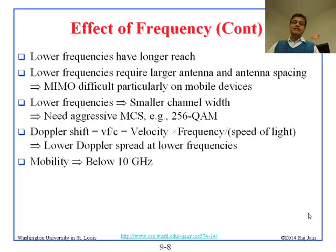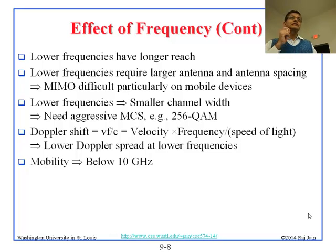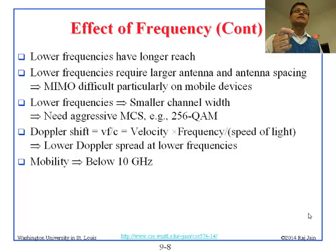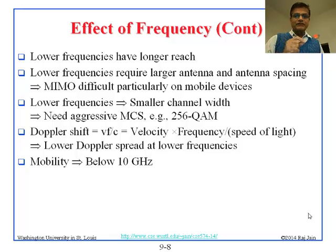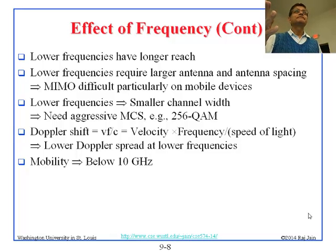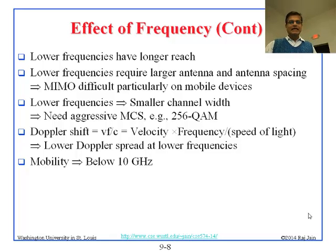Doppler shift is V times F divided by C — velocity times frequency over the speed of light. As the frequency goes down, the Doppler shift goes down, which means you can drive faster. Therefore lower frequencies are good for mobility. You cannot really move fast with 60 GHz.